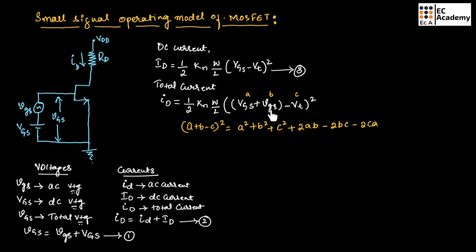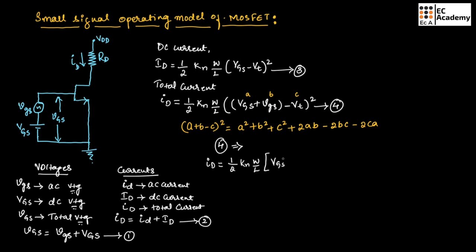Since A and B are positive, we get a positive sign for the 2AB term. Since C is negative, multiplying A and B with C gives negative signs for the 2BC and 2CA terms. Since we are taking the square of C, we get a positive sign for C². Expanding equation 4: iD = (1/2) · KN · (W/L) · [VGS² + vgs² + VT² + 2·VGS·vgs − 2·vgs·VT − 2·VGS·VT].